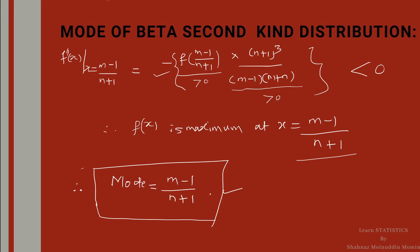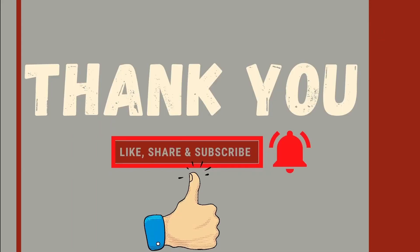In this lecture, we learned the mode of beta second kind and derived the expression for the mode of a beta distribution of second kind. In the previous lectures, we have already learned many more concepts from beta second kind, beta first kind distribution, and continuous uniform distribution. If students want to learn all the topics, click on the i button at the top right corner of the screen; links to all lectures are in the description box. If you liked this lecture, click the like button, share with your friends, and subscribe to the Learn Statistics channel for upcoming lectures. We will meet in the next lecture with the next topic from beta second kind distribution. Till then, thank you.